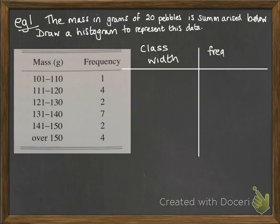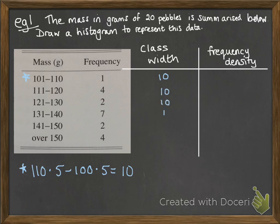So the first thing we need to do is work out the class width and the frequency density for each thing. So the class width of that first one, remember we're looking for the upper boundary minus the lower boundary. And since these have been rounded to the nearest gram, we need to go to 0.5 of a gram. So 110.5 minus 100.5 gives us that class width of 10. We can do the same for each of the other classes.